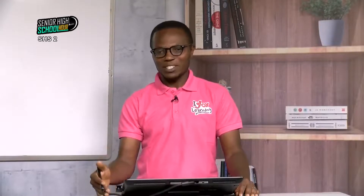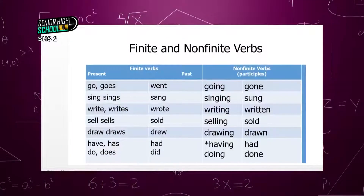When we look at the non-finite forms, we are looking at the ING forms — called present participles — and the EN forms, called past participles. So the finite forms are either present or past, and the non-finite are the present participle and the past participle.